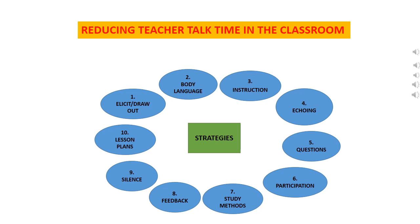Now let's talk about the strategies — how you can reduce teacher talk time in the classroom. Sabse pehli strategy hai: elicit or draw out. Iska matlab hai bachon ko evoke karna taaki wo concept ko khud se samjhein. Aur samajhne ke baad, jab teacher unko padha de, to bachon ko jo samajh aaya hai wo apni hi language mein explain kar paayein. Is tarah teacher talk time kam hoga aur bachon ke ideas express honge.